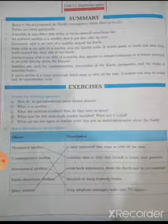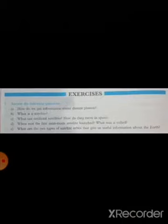The first question is answer the following questions. Question number 1 is how do we get information about distant planets? Do you know how we get information about distant planets? Yes, we get information about distant planets from robot spacecraft called space probes. Very good.